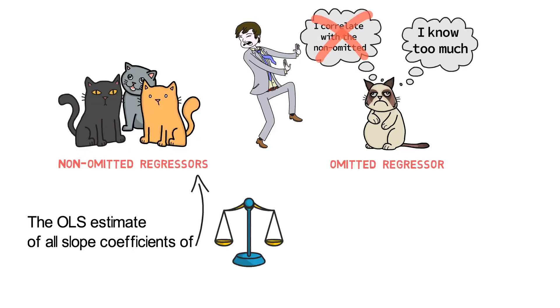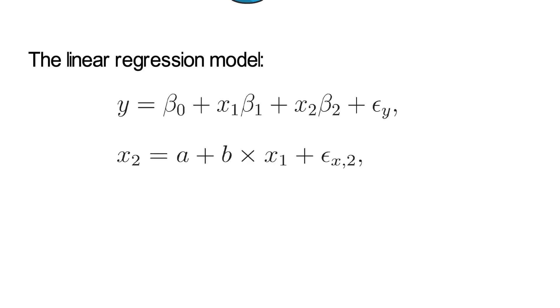Now let's look at the math. Here's a simple example. Suppose the linear regression model in population reads as follows: y equals beta 0 plus x1 beta 1 plus x2 beta 2 plus epsilon y, and x2 is a plus b times x1 plus epsilon x2, and both epsilons here are white noise shocks.